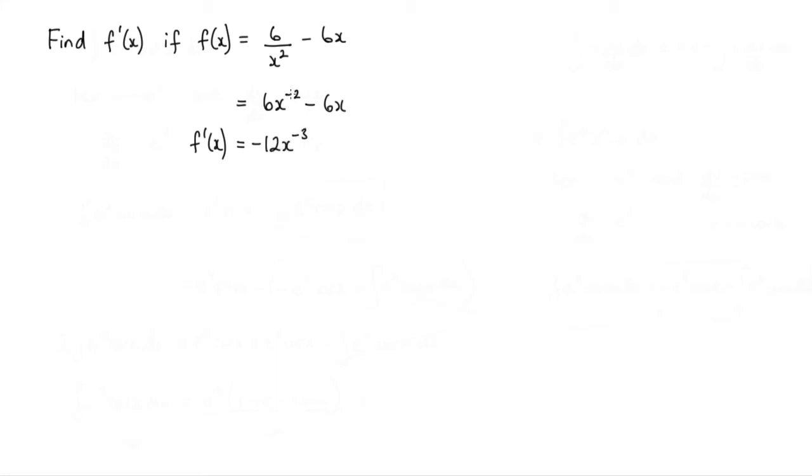And if you recall, the rule is you take the power, multiply it by the coefficient, that gives us negative 12, and then reduce the power by 1, negative 3. And differentiating the 6x will just give us 6.